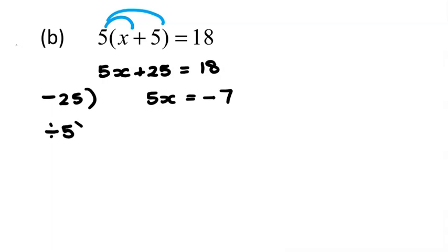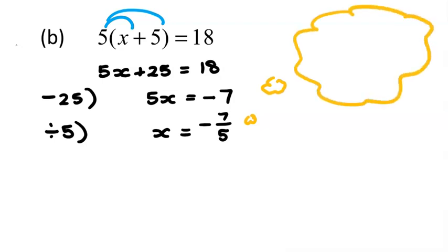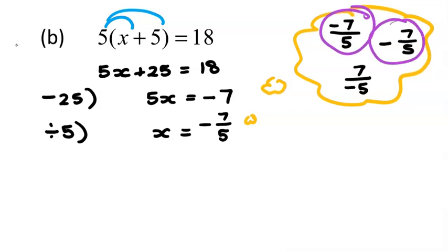Dividing both sides by 5, x equals negative 7 over 5. I love an improper fraction. One thing to note: I could write that as negative 7 over 5, or with the negative out the front as −7/5, since a negative divided by a positive gives a negative overall. We could also write it as 7 over negative 5, but that's a bit like wearing pajamas to school — technically correct but looks a little odd. My preferred form is −7/5, though having the negative in the denominator would not be permitted in future year levels.